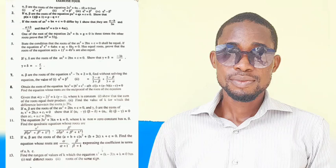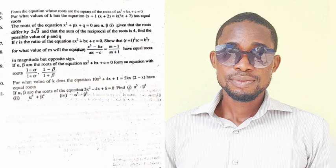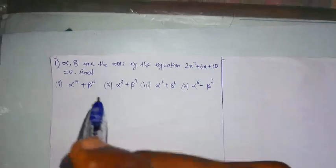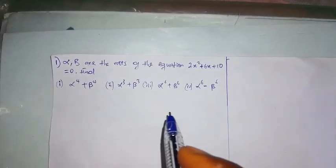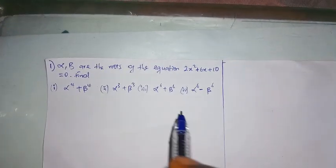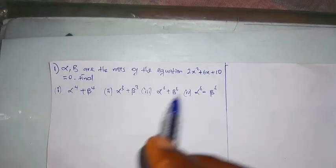I'll be solving all the questions on this page and the questions on the next page also, so sit back and see the solutions. Question one says: what are alpha and beta, the roots of the quadratic equation?